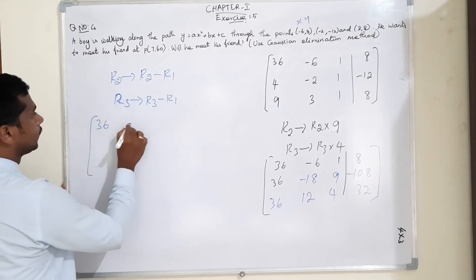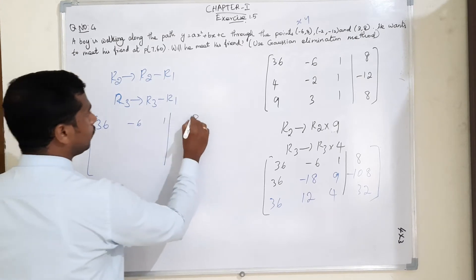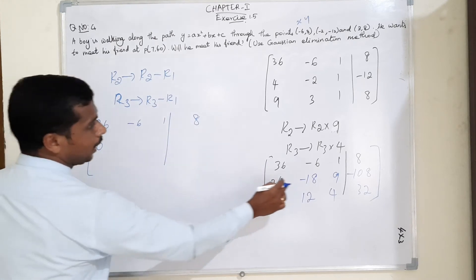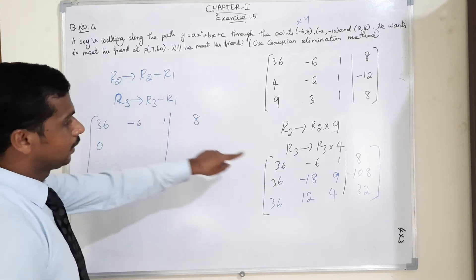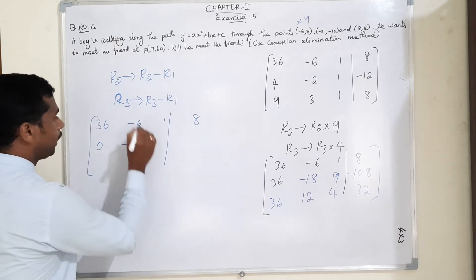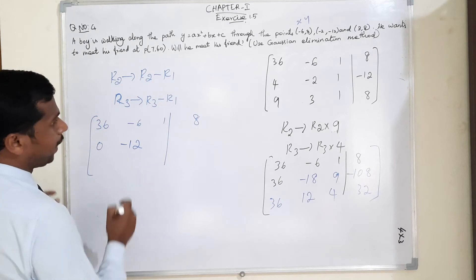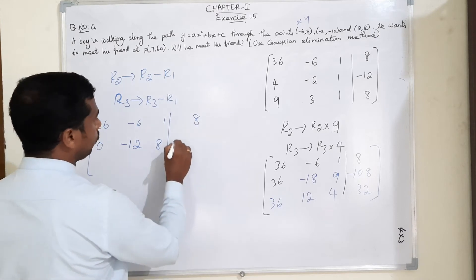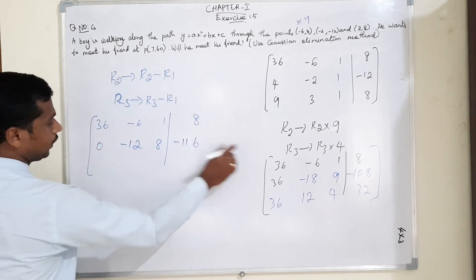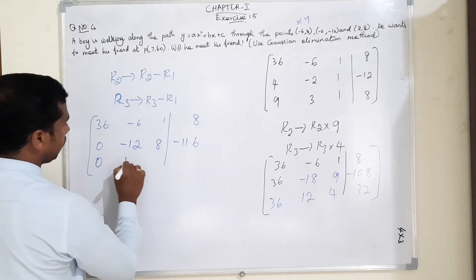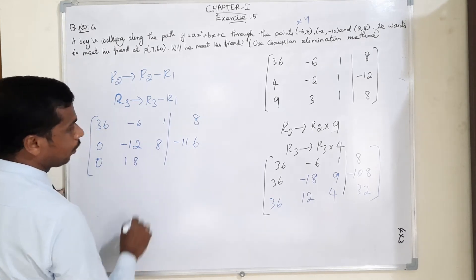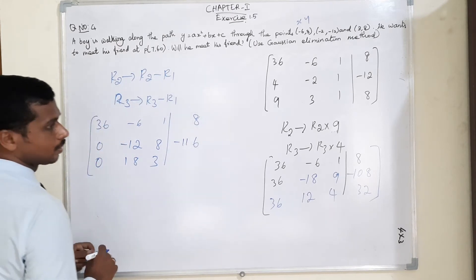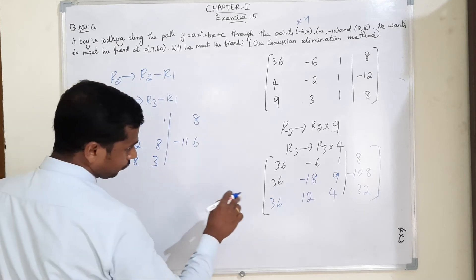R1 as it is: 36, -6, 1 | 8. Then R2 minus R1: 36 - 36 = 0; -18 + 6 = -12; 9 - 1 = 8; -108 - 8 = -116. Third row R3 minus R1: 36 - 36 = 0; 12 + 6 = 18; 4 - 1 = 3; 32 - 8 = 24.